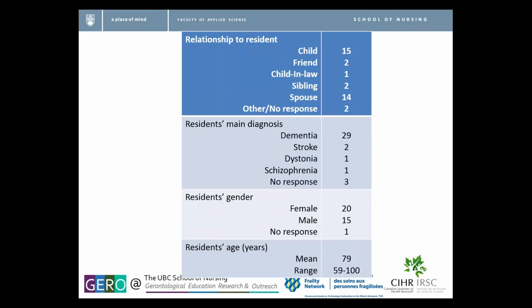There was a split between being a child and being a spouse in terms of the majority of those surveys. Most of the people who responded had a relative with a primary diagnosis of dementia. There were slightly more women than men among the residents, and their age was around 80.